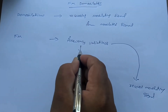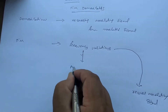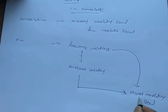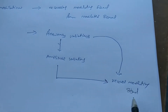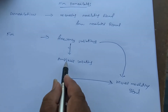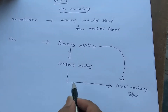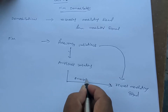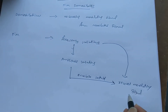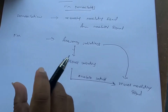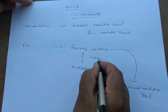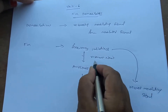The approach for FM demodulation is: frequency variations are converted into amplitude variations, and from amplitude variations we can recover the modulating signal. Instead of directly converting frequency variations to the modulating signal, we follow this two-step approach. To recover the modulating signal from amplitude variations, we use an envelope detector. The component used to convert frequency variations into amplitude variations is a resonant circuit or tank circuit.